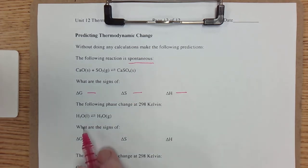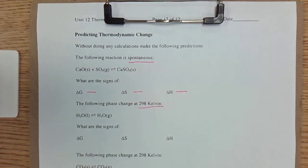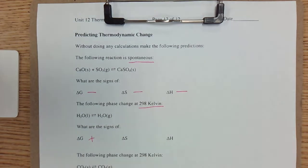Now, our next example: water liquid going to water gas. That's boiling, isn't it? And we're talking about 298 Kelvin, which is room temperature. Does water spontaneously boil at room temperature? No. ΔG is positive.